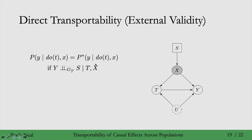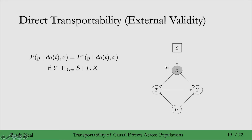This is known as direct transportability: the exact same causal effect in population π equals the causal effect in population π*. We've directly transported it from one population to the other. In other words, the experiments in π are externally valid and transfer to π*, under the assumption that the only difference between the distributions is in the causal mechanism for x — how x is generated can be different between p and p*.